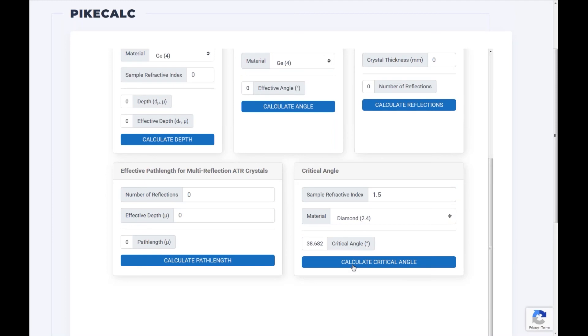So the critical angle is roughly 39 degrees. So what does that mean? That means our accessory must have an angle of incidence greater than 39 degrees. Let's see what happens with the critical angle once we change to another popular ATR element, which is germanium. And now that critical angle drops all the way down to 22.